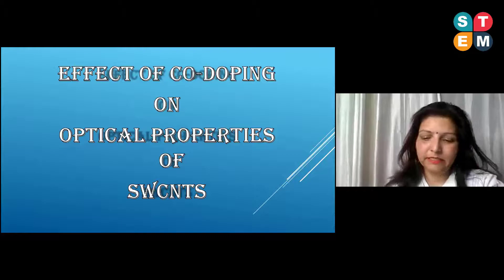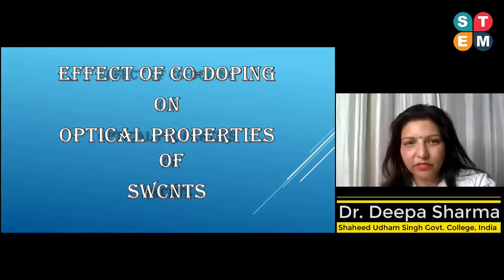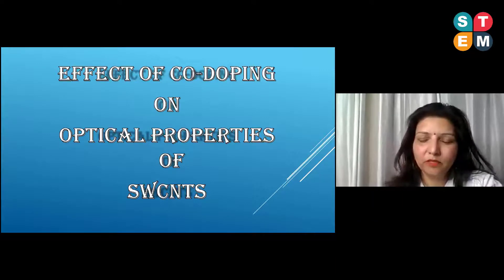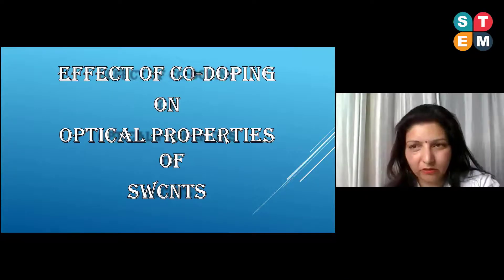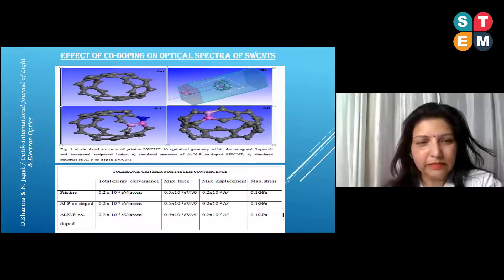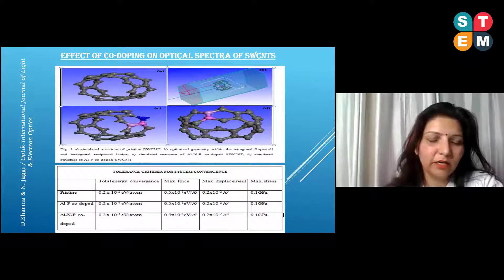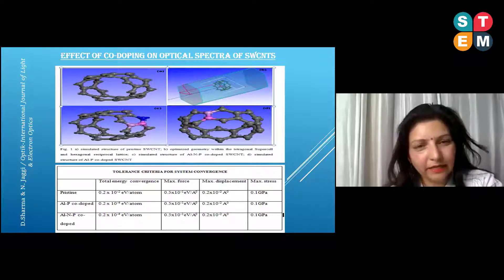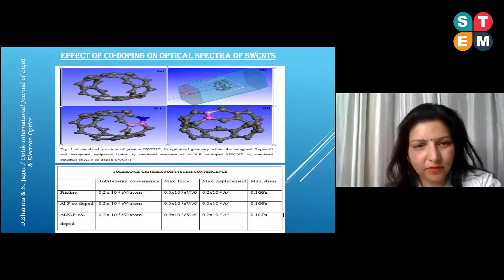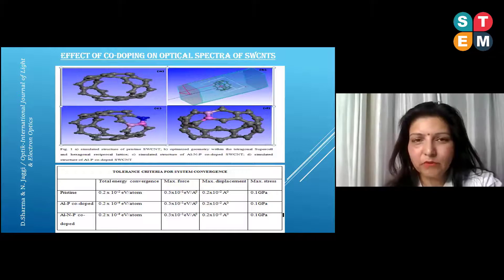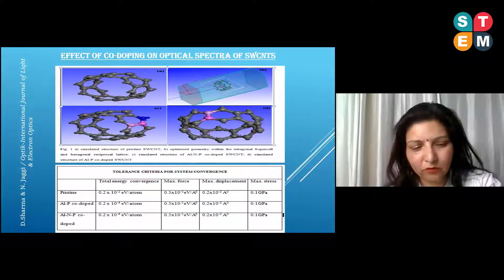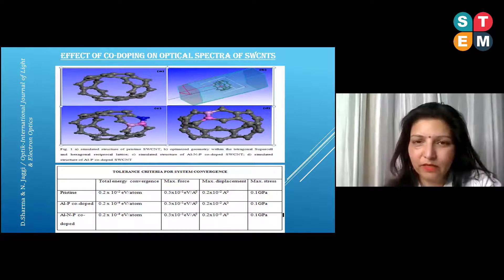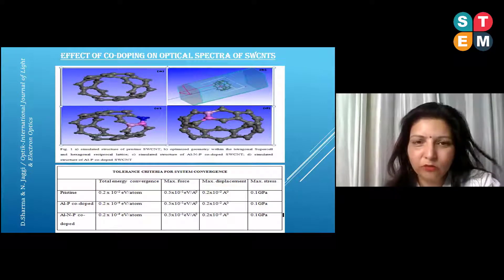Another study I did using the same software and DFT-based simulation calculations was the effect of co-doping on the optical properties of single-walled carbon nanotubes. These results were published in the International Journal of Light and Electron Optics (Optik). This is again a 9,0 single-walled carbon nanotube simulated by me, and I obtained calculations on its optical properties for the pristine structure.